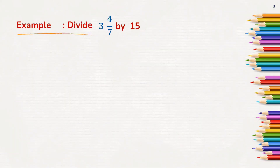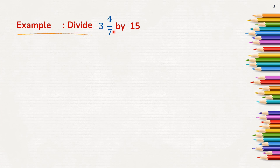Look at another example here. We need to divide 3 and 4/7 by 15. What is the reciprocal of 15? When it is a whole number, we will consider 1 as its denominator. So the reciprocal of 15/1 is 1/15. Now, 3 and 4/7 is a mixed fraction. So when it is a mixed fraction, we have to convert it into an improper fraction. In our previous videos, we learned how to convert a mixed fraction into an improper fraction. We need to multiply the whole number into the denominator and then add the numerator.